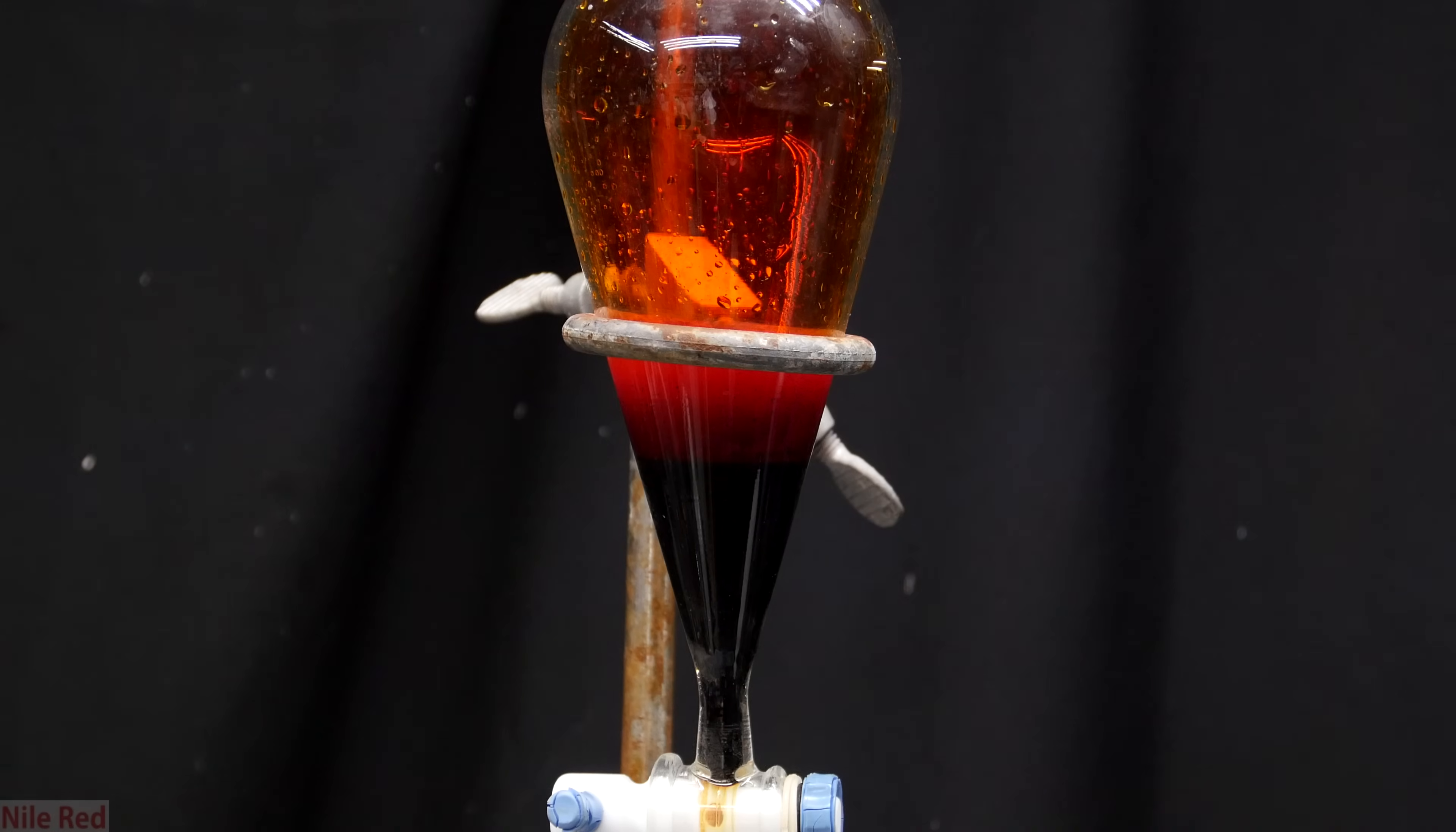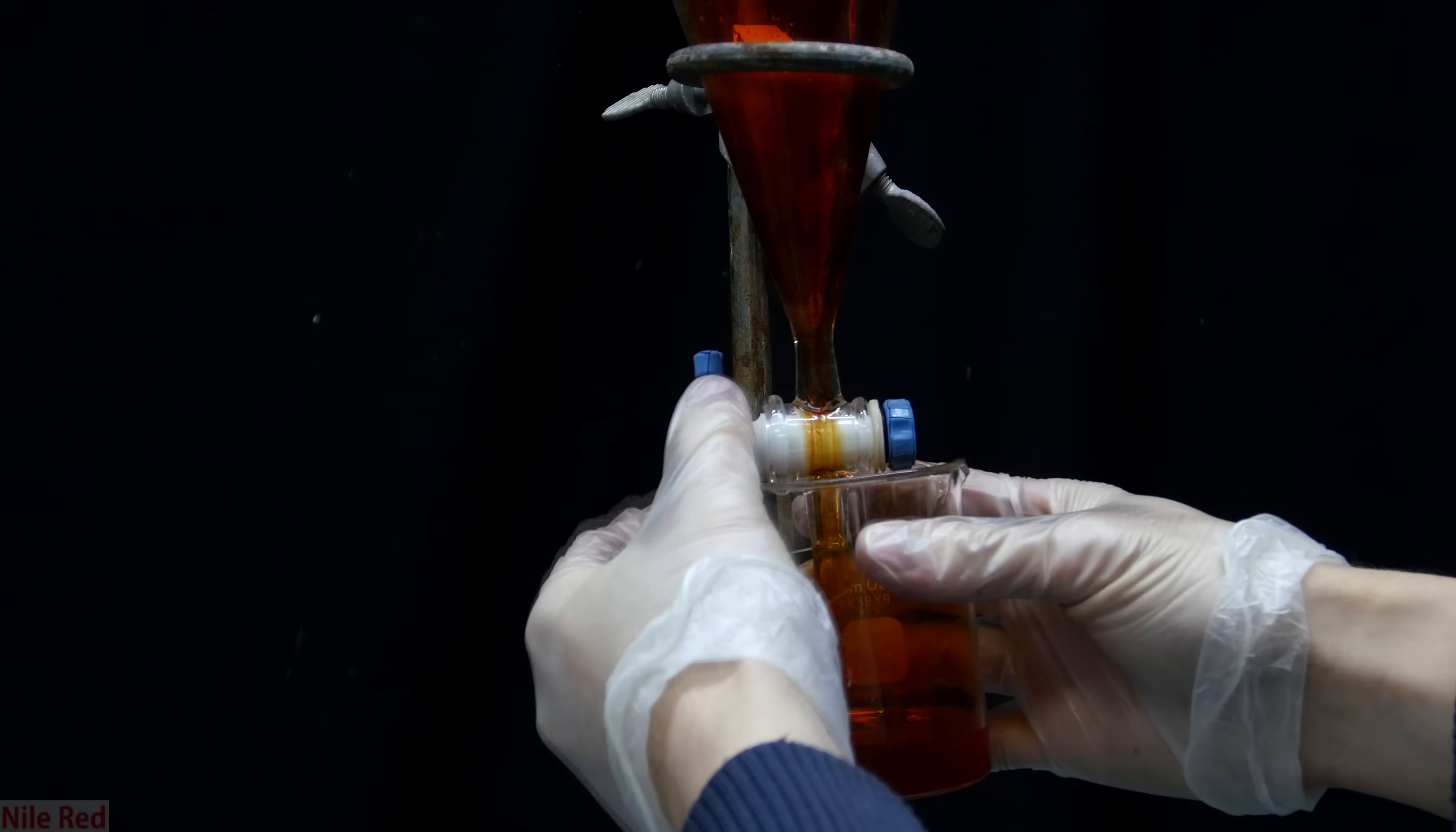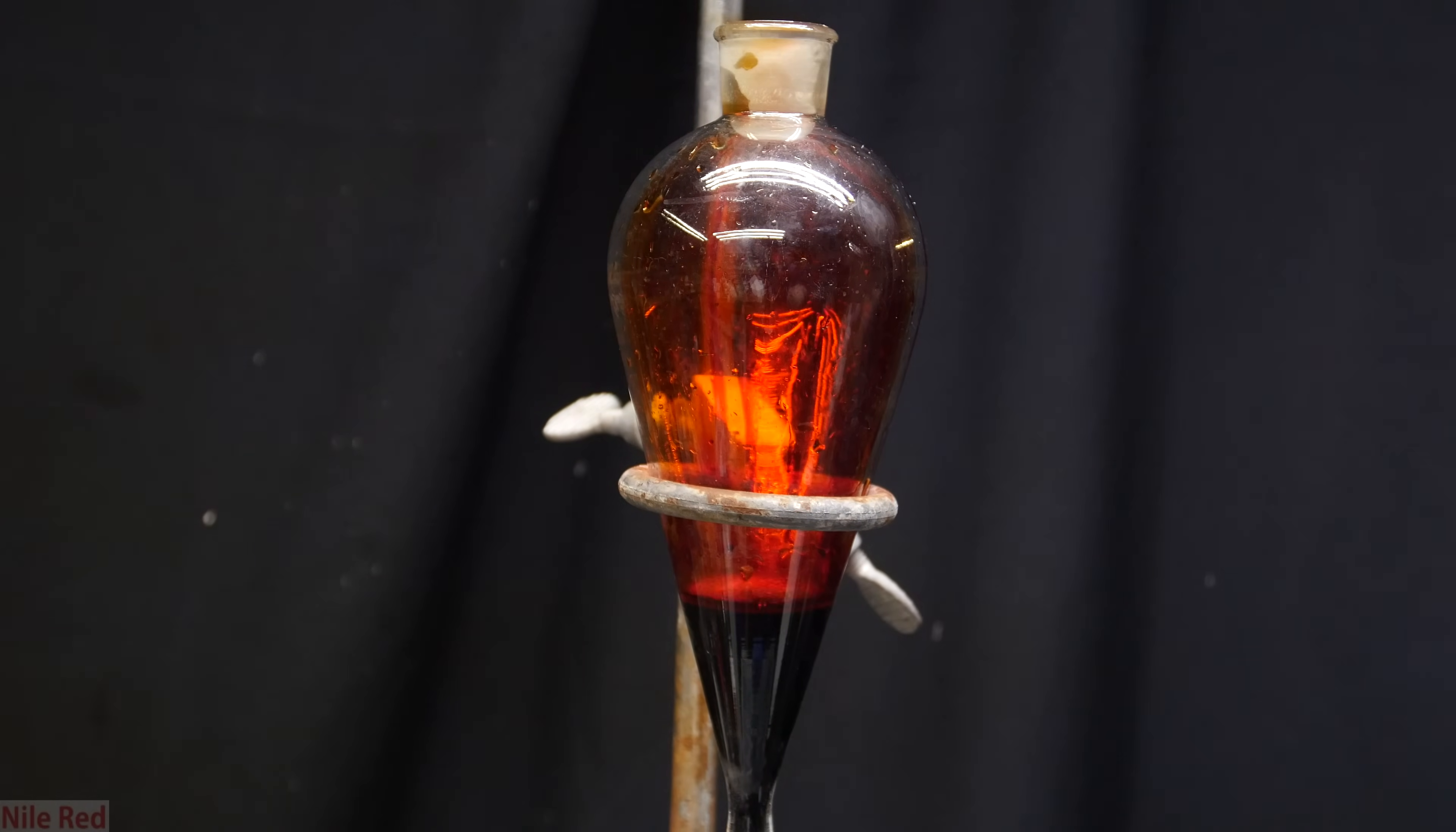Once it's all in the separatory funnel, if you look at the top, you can actually see a water layer. So to get rid of this, I used a beaker and I drained our bottom layer bromine into it. The top water layer is pretty contaminated with bromine so it needs to be drained off and neutralized using sodium thiosulfate. The now cleaner bromine is then poured back into the separatory funnel. You can see just how much fuming is occurring so it's really important to do this in a well ventilated area.